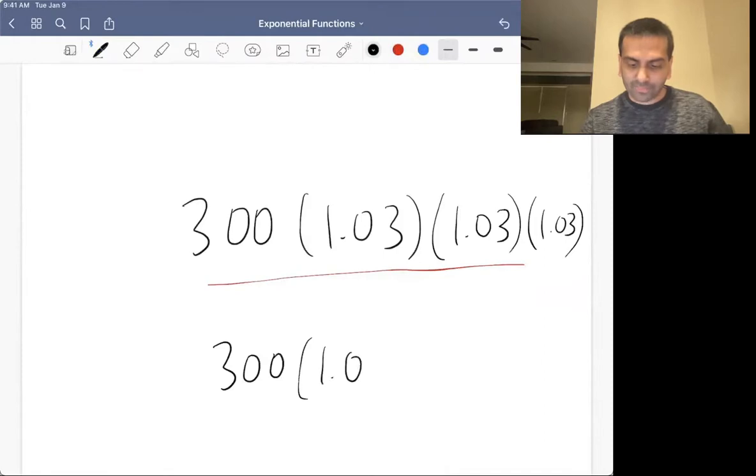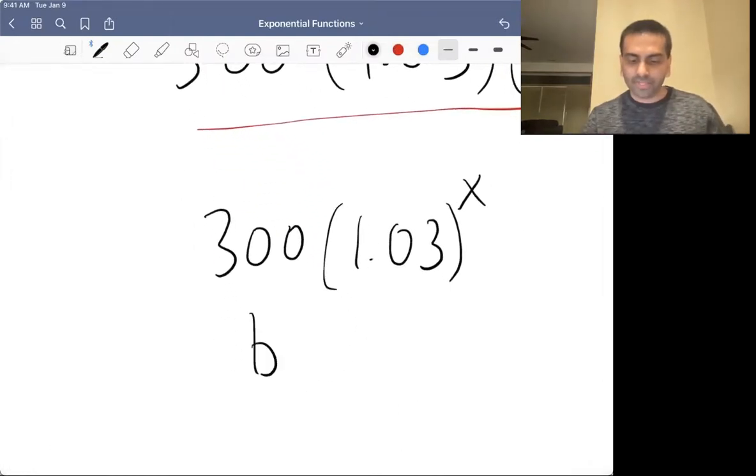And the way to represent that in math, of course, multiplying itself by x times is raising that 1.03 to the power of x. And that's where the b, a, to the x comes from. The initial value, the a, which is sort of like your growth factor, to the power of x.